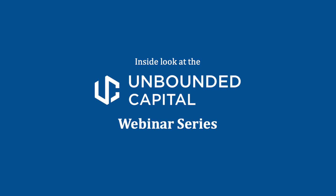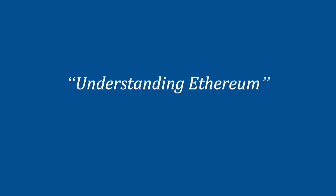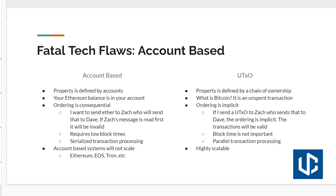Property on Bitcoin is defined by a chain of ownership — a chain of digital signatures, as described in the white paper. So what actually is Bitcoin? It's the end of one of those chains of ownership. It's an unspent transaction. All these other past states on the chain have been spent, and what we have at the very end is something that's unspent. What's key to that is that you can treat each of those unspent transaction outputs separately — they're not tied to an account that's part of the system.